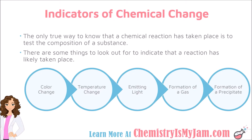A precipitant is a solid that forms during a chemical reaction. So, imagine you pour two liquids together and a thick, cloudy substance starts to form and settle out at the bottom — that would be a precipitant. So, these are the indicators of chemical change to help you recognize when a reaction has taken place.